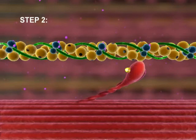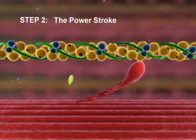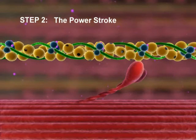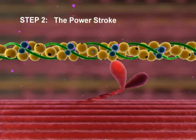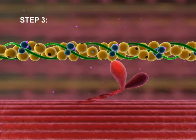Step 2: The Power Stroke. ADP is released and the activated myosin head pivots, sliding the thin myofilament toward the center of the sarcomere.